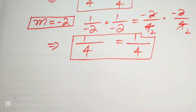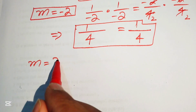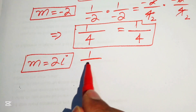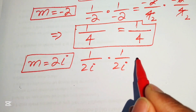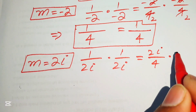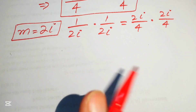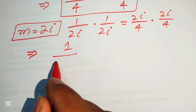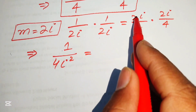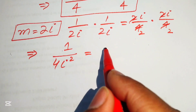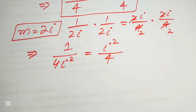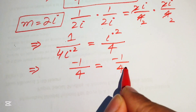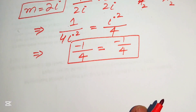Verifying m = 2i: substituting gives (1/2i)(1/2i) = (2i/4)(2i/4). On the left, 2i × 2i = 4i² = -4, so we get 1/(-4) = -1/4. On the right, 2i × 2i = 4i² = -4 and 4 × 4 = 16, giving -4/16 = -1/4. Both sides equal -1/4, so m = 2i satisfies the equation.